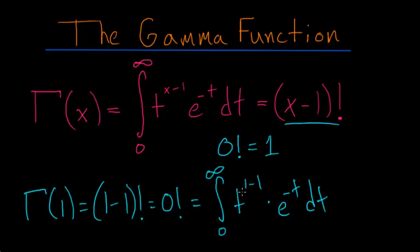Notice that t to the 1 minus 1 would just simplify to t to the 0, and anything to the 0 power is equal to 1. So this expression here simplifies to 1.